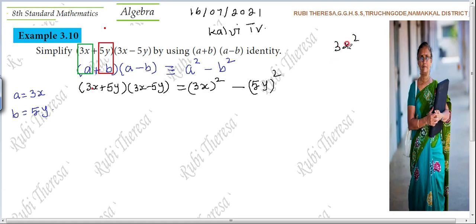3x square you should not write. They themselves gave which identity to use. So A squared is 3x, B squared is 5y. So A squared is 3x the whole square minus B squared is 5y the whole square. So this is the answer.